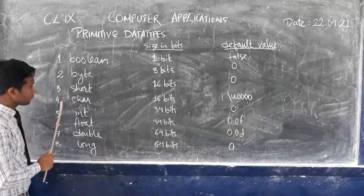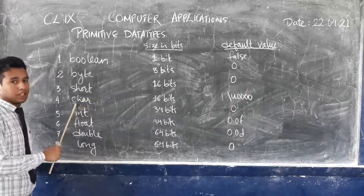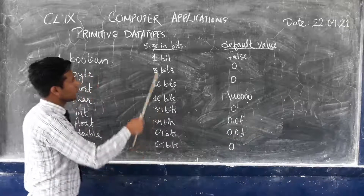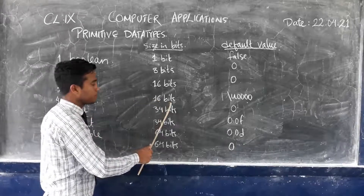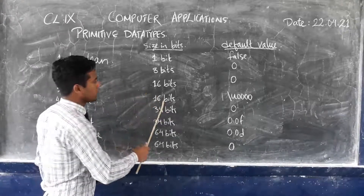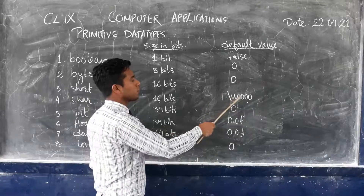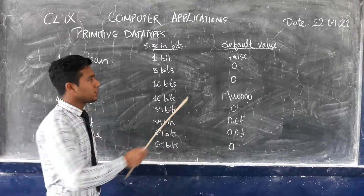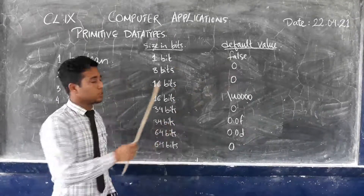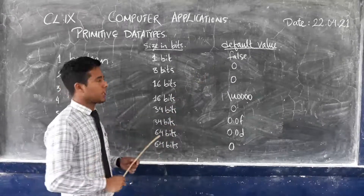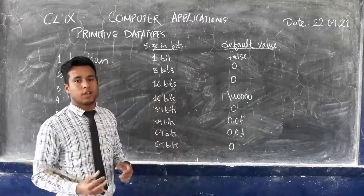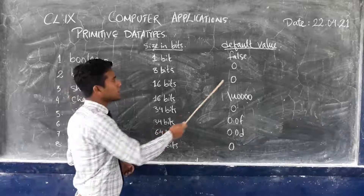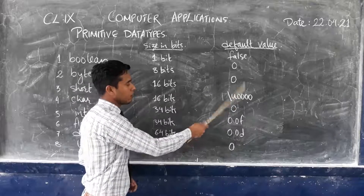Now the fourth one is char, which means character type. The size of this character data type in bits is 16 bits, and the default value is \u0000 — that is, backslash u followed by four zeros. You have to remember this default value as it may come during exam time.